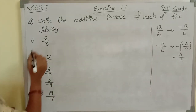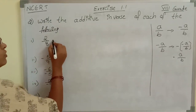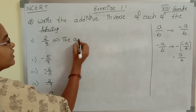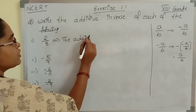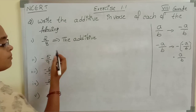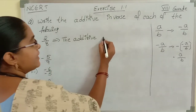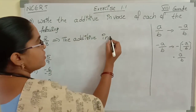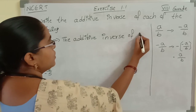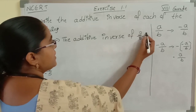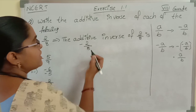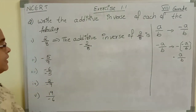Now see the first one: 2 by 8. The additive inverse — write this complete answer in your exams or notebook. The additive inverse of 2 by 8 is minus 2 by 8. Just we need to change the sign.